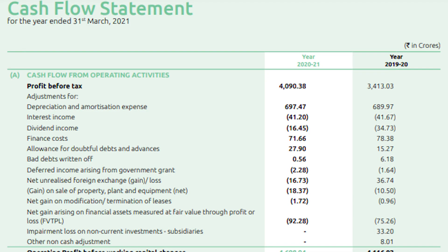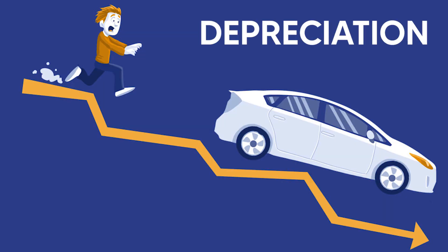The last statement is the cash flow statement, which shows the true cash position of any company. Although the profit and loss statement shows the net profit, it also includes things like depreciation, which is a non-cash expense — there is no cash exchange in depreciation; it's just that the value of that asset is decreasing over time. Also, items like gain on sale of fixed assets are not captured in the income statement. That's where your cash flow statement comes into play.